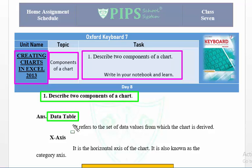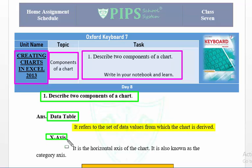The first component is the data table. It refers to the set of data values from which the chart is derived. The data table has all the data and values used to build the chart. For example, if you have taken two tests from students — test one and test two — you write the marks of both tests in the data table, then create the chart.